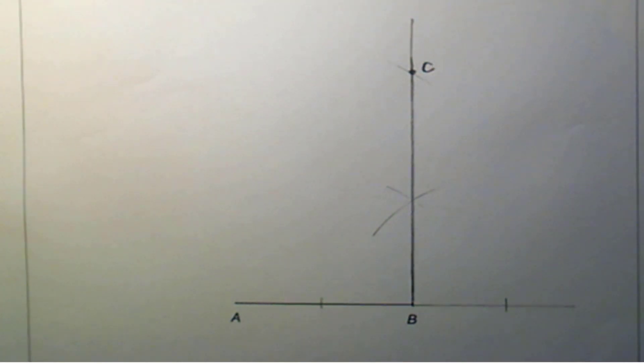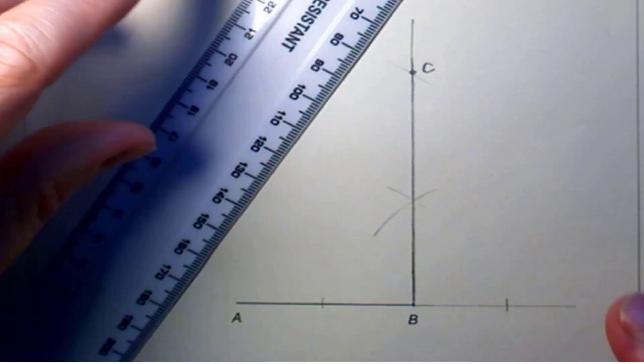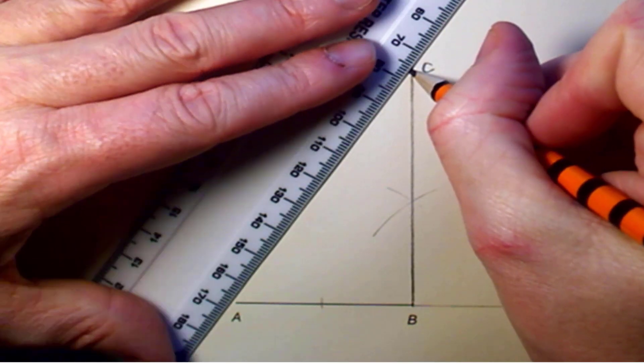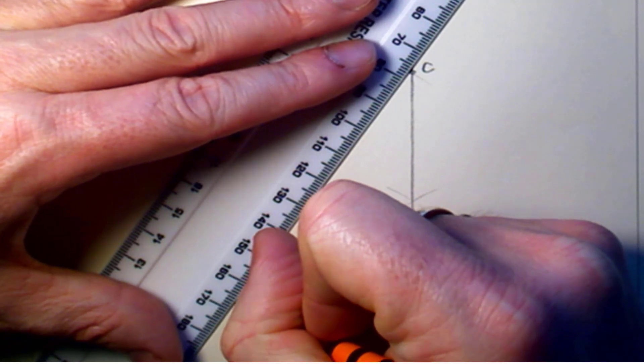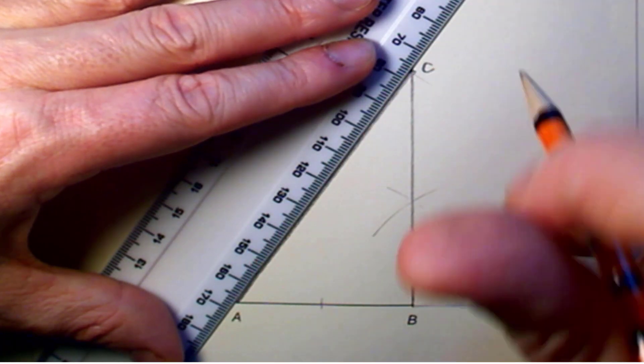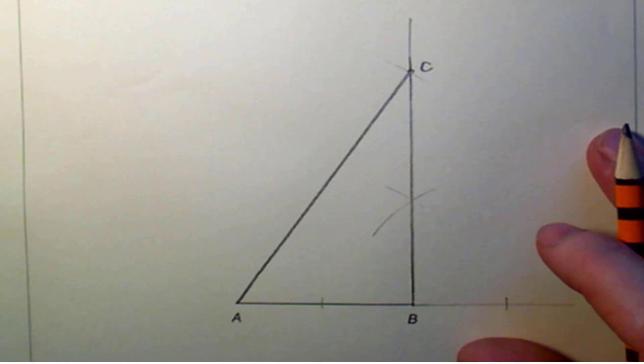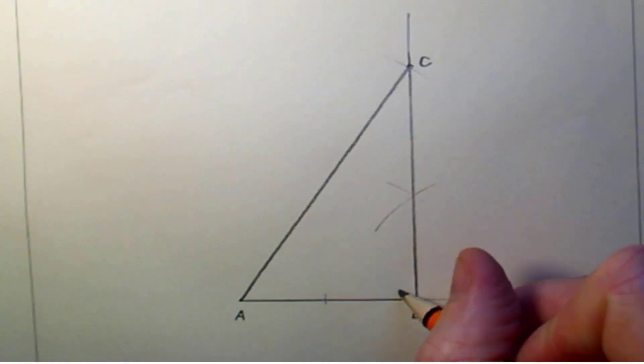and at the point where it crosses that will be the point C. Now I've found C, I can simply join A to C with my ruler. Remember to leave your construction marks visible and you might want to use your ruler and protractor just to double check your 90 degree angle and the length that you drew.